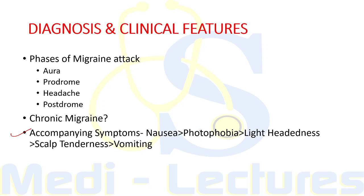Migraine is a feature-rich headache accompanied by a variety of symptoms. The most common symptom associated with migraine is nausea, present in 87 percent of cases, followed by photophobia, lightheadedness, scalp tenderness, and vomiting. Rarely there can be diarrhea, vertigo, and other symptoms.